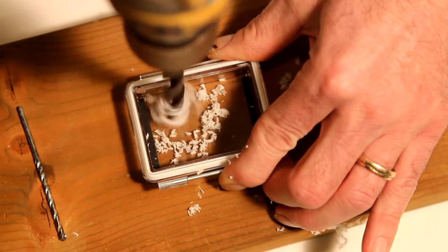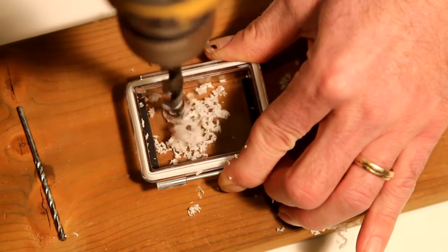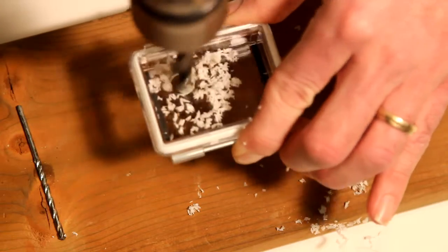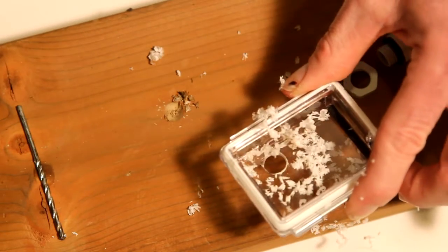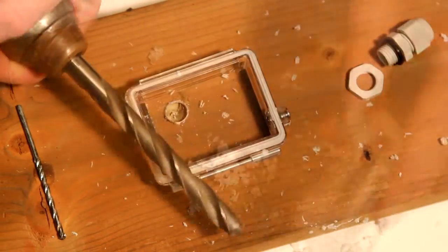The 7/16th drill bit is a really tight snug fit with the cable gland. You could probably go a little larger if you like, but I really like the nice snug fit of the 7/16th drill bit.